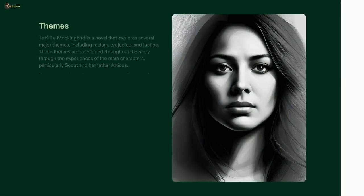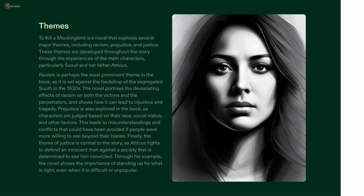Set in the 1930s in a small American town, To Kill a Mockingbird remains a timeless classic that has appealed to readers across generations. It delves into themes of racism, prejudice, and justice through the experiences of characters like Scout and Atticus Finch. The story illustrates the destructive influence of racism and how it can lead to misunderstanding and unfairness in society. It emphasizes the significance of upholding what is right, even if it is difficult or not socially accepted. Since its publication, To Kill a Mockingbird has retained its relevancy and is able to reach out to contemporary readers.